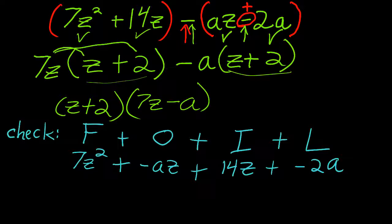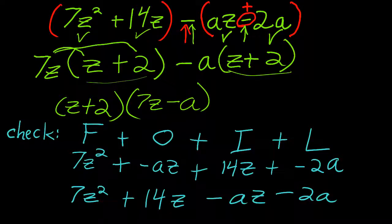Now, I can rearrange my terms as long as there are plus signs between them. So I'll have 7Z squared plus 14Z minus AZ minus 2A. And that is exactly what I started out with originally. So I was correct.